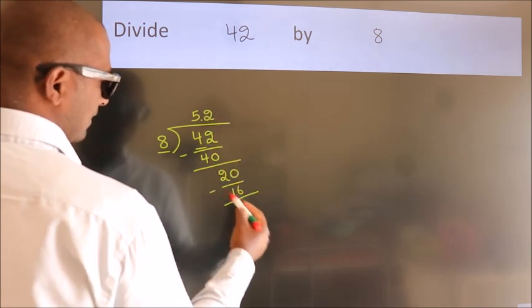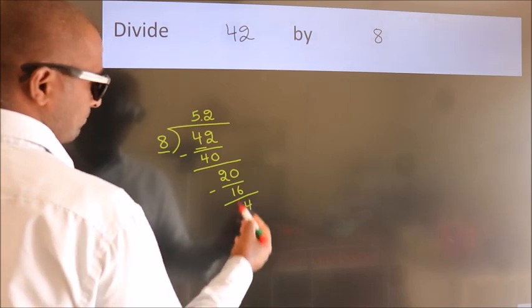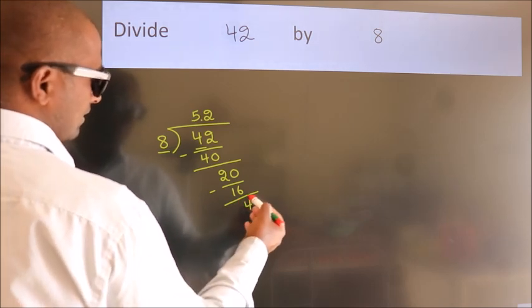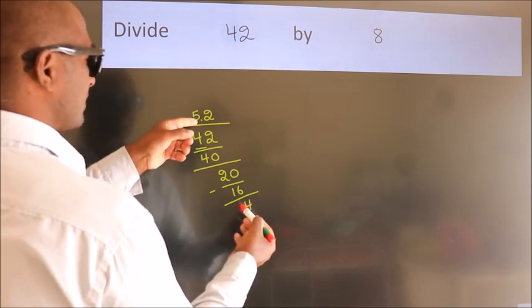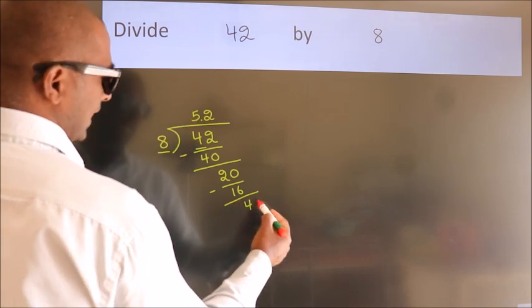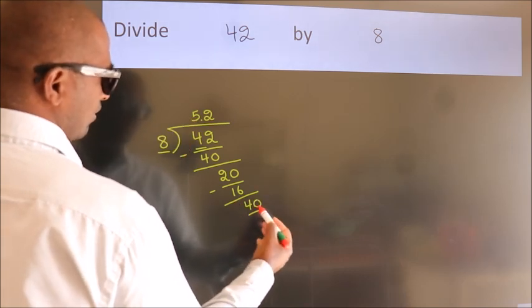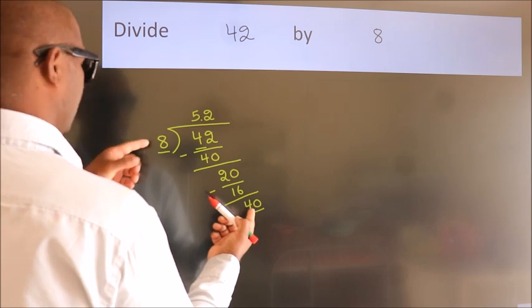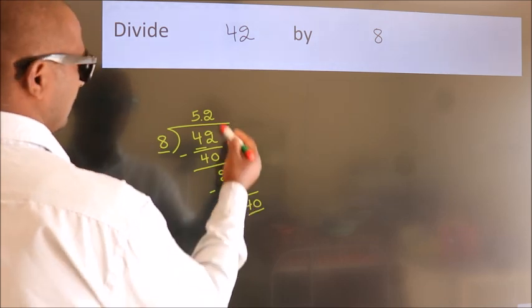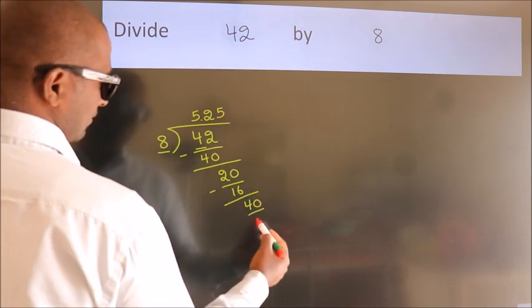Now we subtract. We get 4. After this, we already have the decimal, so directly take 0, making it 40. When do we get 40 in the 8 table? 8 times 5 equals 40.